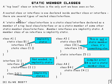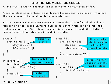A static member class, or interface for that matter, is a static class or interface declared as a member of a top level class or interface, or as a static member of another static member class or interface. Member interfaces are implicitly static, so you don't have to mark them as static. And a member class of an interface is also implicitly static. Here are some examples that make it all clear.